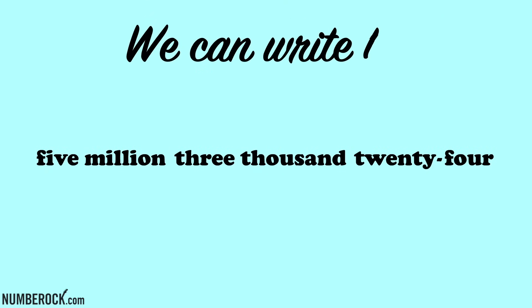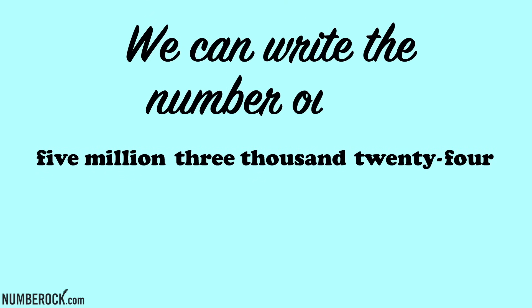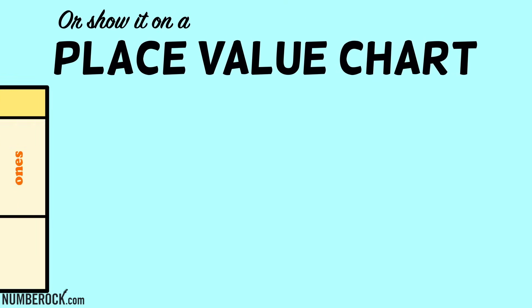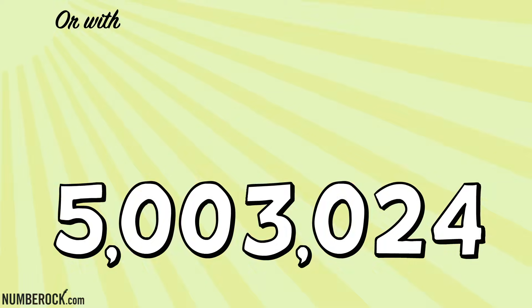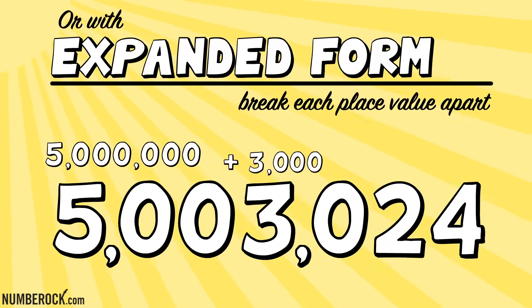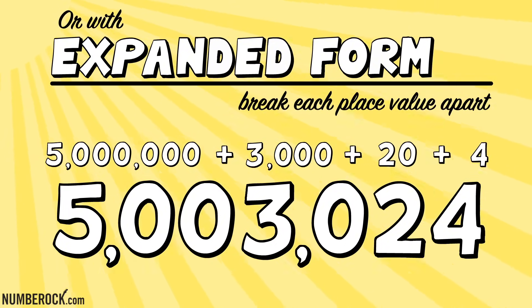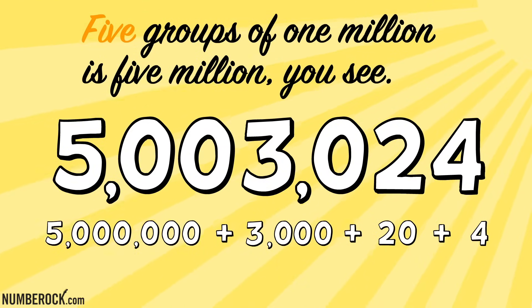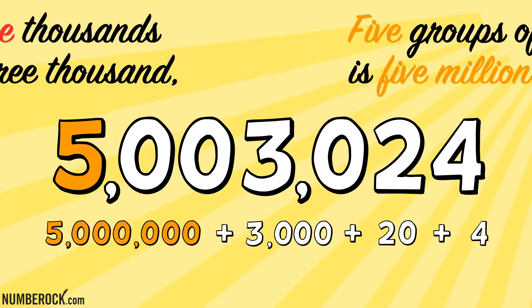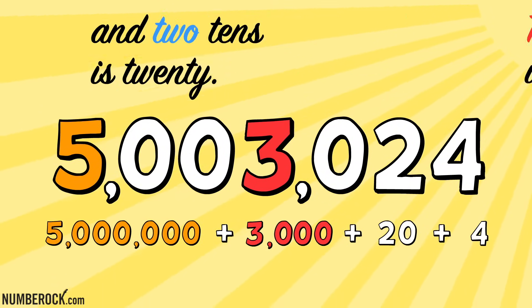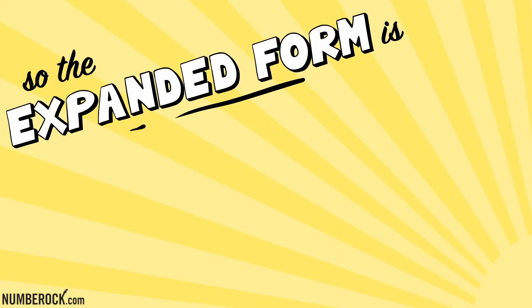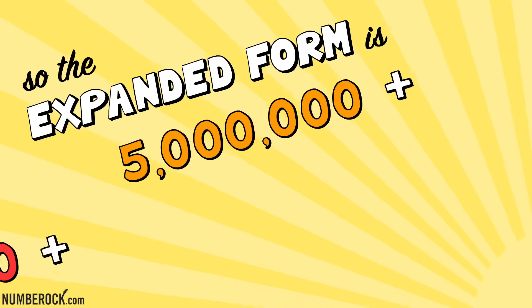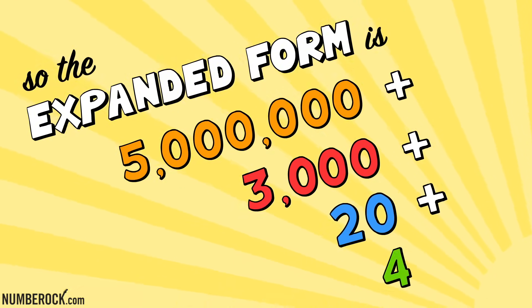We can write the number out in one form, or show it on a place value chart, or with expanded form — break each place value apart. Five groups of one million is five million, three thousands is three thousand, and two tens is twenty, four ones makes four. So the expanded form is five million plus three thousand plus twenty plus four.